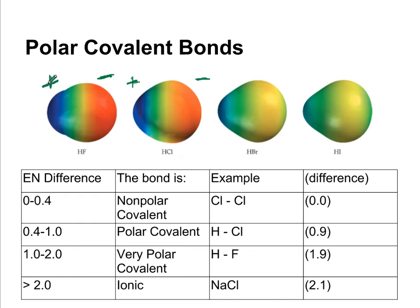And if the electronegativity difference is greater than 2, chances are you're looking at a metal and nonmetal and it's an ionic bond and there's no shared electrons. They've just been donated from the metal to the nonmetal.